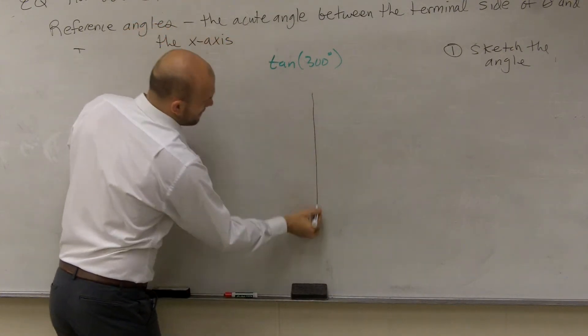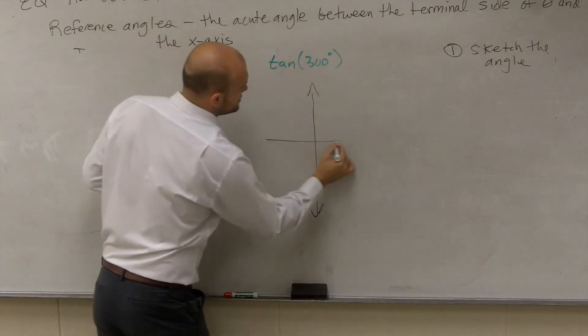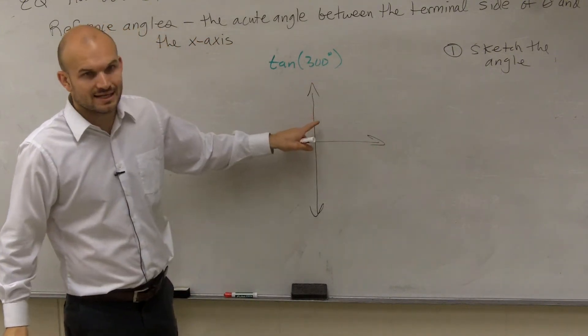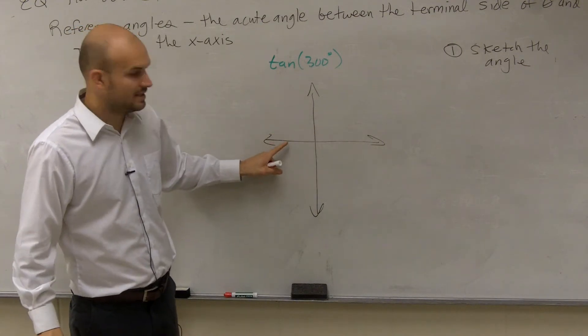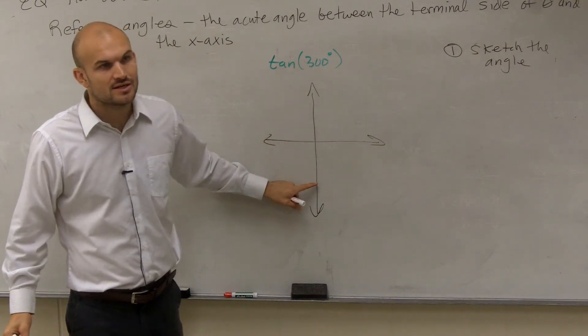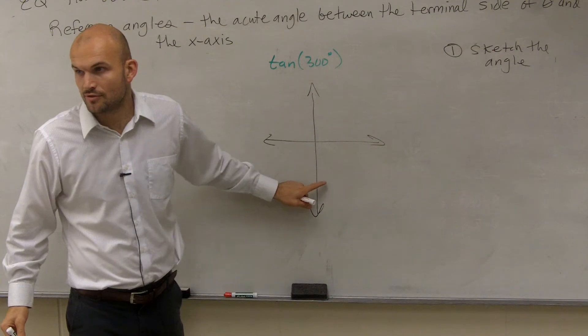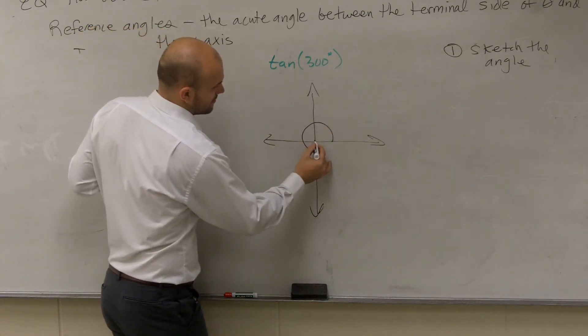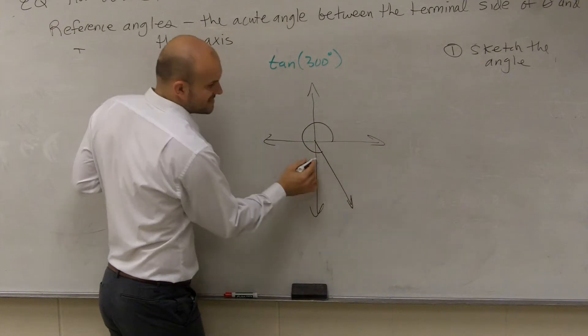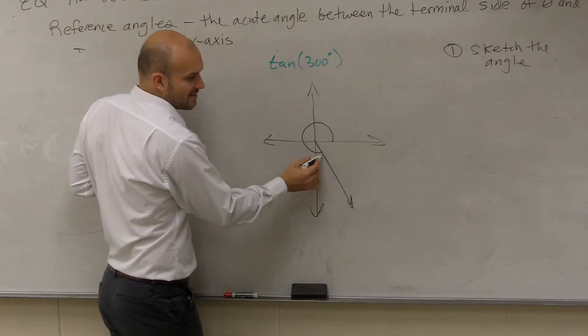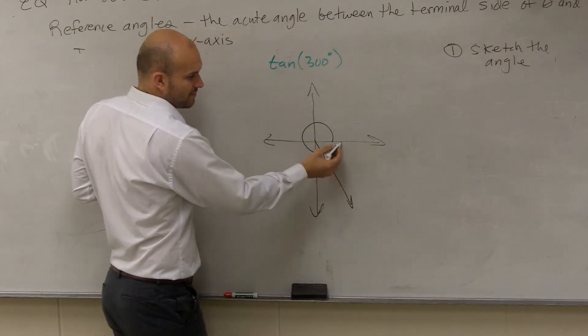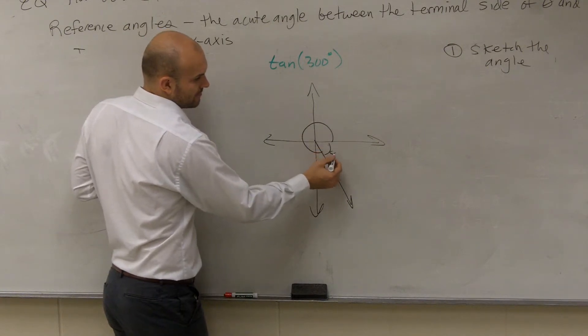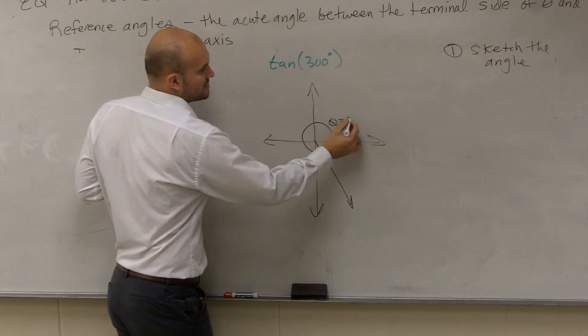So where is 300 degrees? Well, we know that here to here is 90, here to here is 180, here to here is 270. So all I need to go is an extra 30 degrees to get to 300. So if I say from here to here is 30 degrees, that means from there to there is roughly 60, right? Theta equals 300.